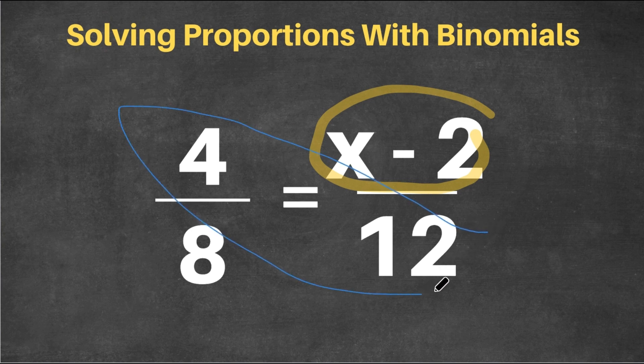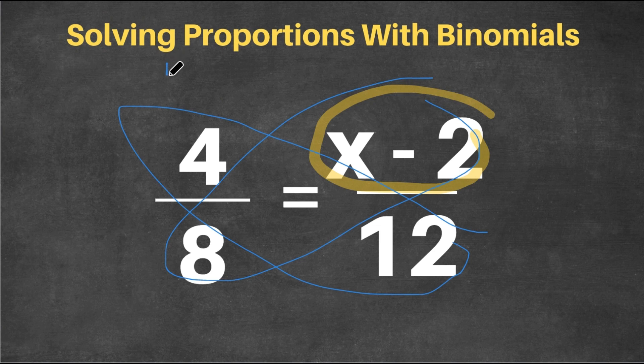So we're going to cross-multiply 12 and 4 and x minus 2 and 8. 12 times 4 is 48, and 8 times x minus 2. Let me write this down here: 8 times x minus 2. We're going to have to distribute the 8 to all the terms in our parentheses. This is distribution.